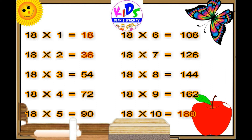Eighteen sixes are 108. Eighteen sevens are 126. Eighteen eights are 144. Eighteen nines are 162.